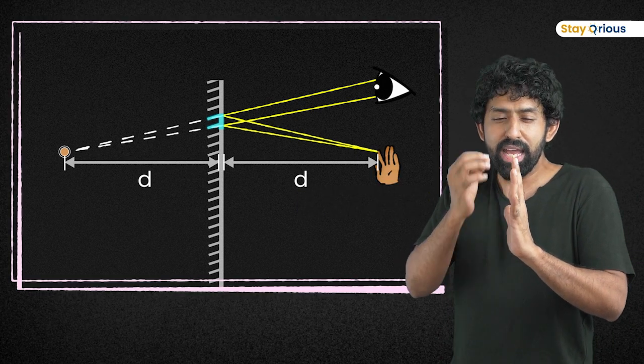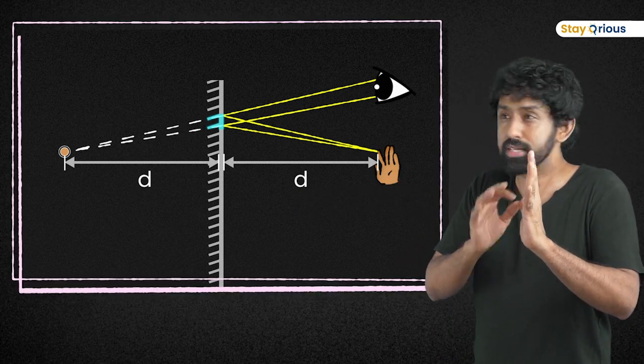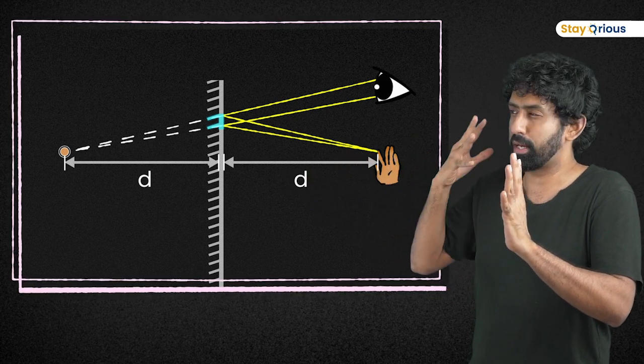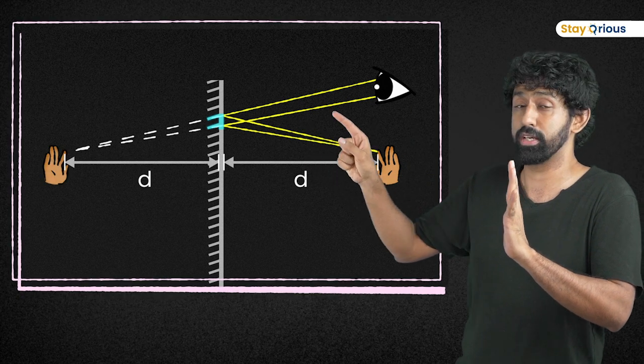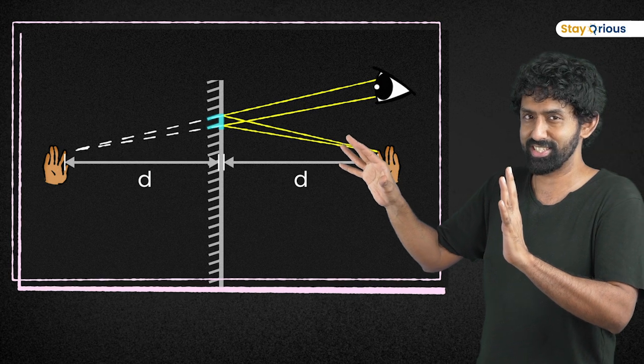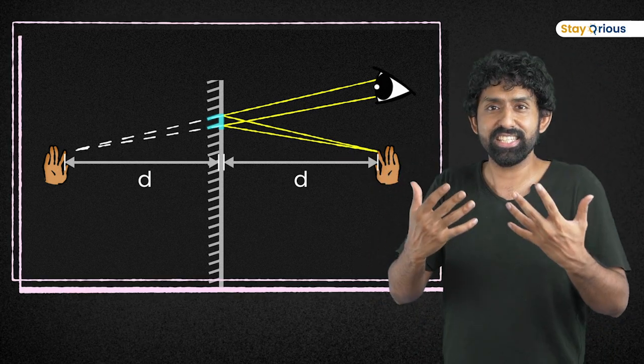Now, you can take every single other point, every single other point on this hand. Same story happens and you see, all of them bouncing off, hitting my eye from different points and I see an image of my hand on the other side. It's creepy, right? There's a weird floating hand that I'm seeing on the other side. Now, let's extend this. How do I see my eye?